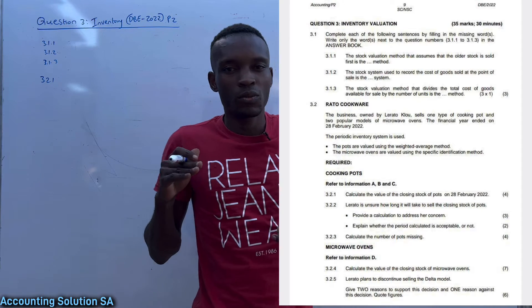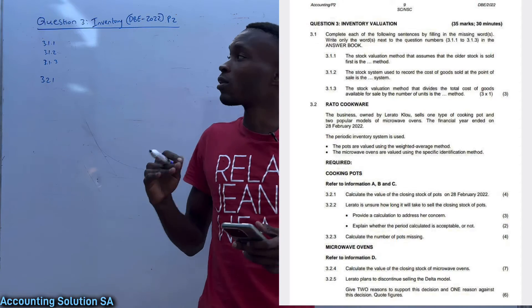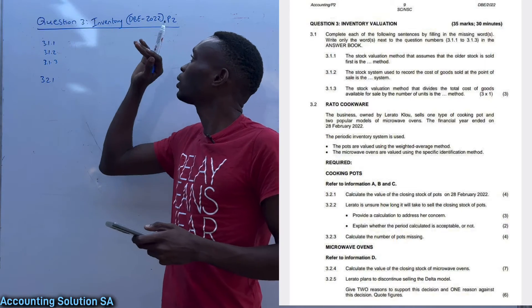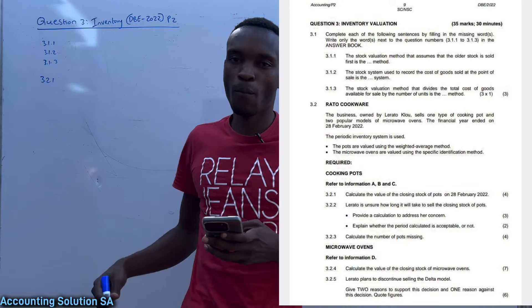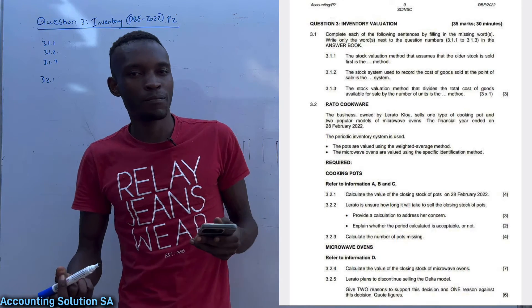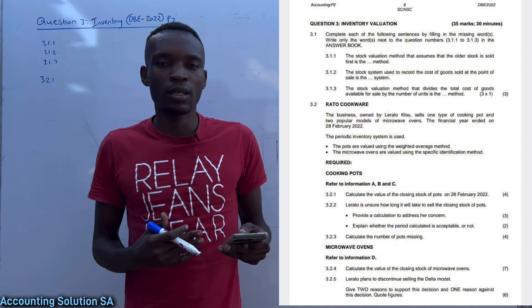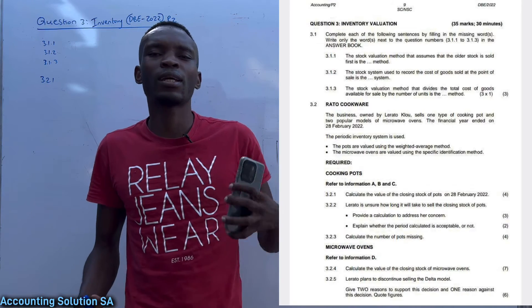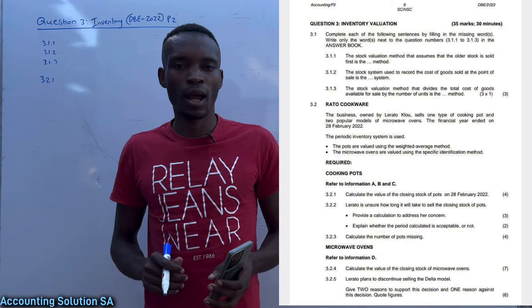Hi Grade 12 students. In today's video we are going to discuss inventory. This is a question paper that was written around June — it was a DBE examination, question three from paper two. This question paper is most suitable for those who are rewriting matric, those going to write an examination around June, and those writing trial as well as final examinations. Please stay tuned and watch until the end.